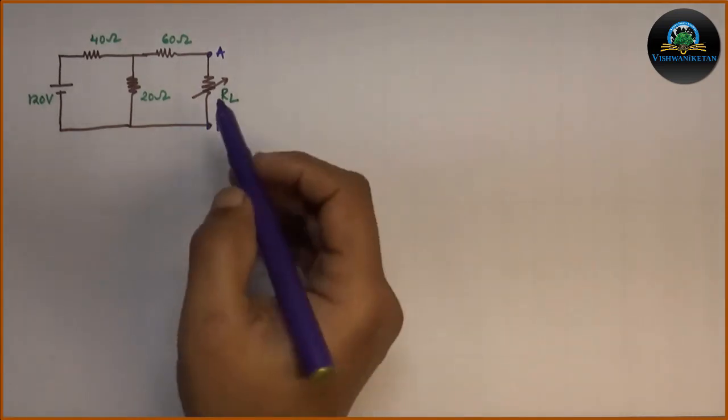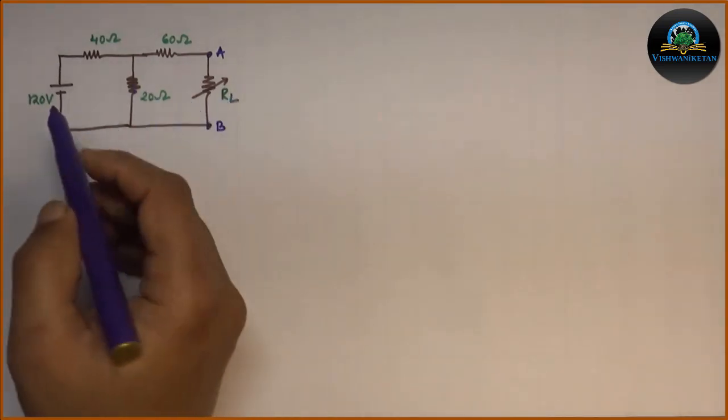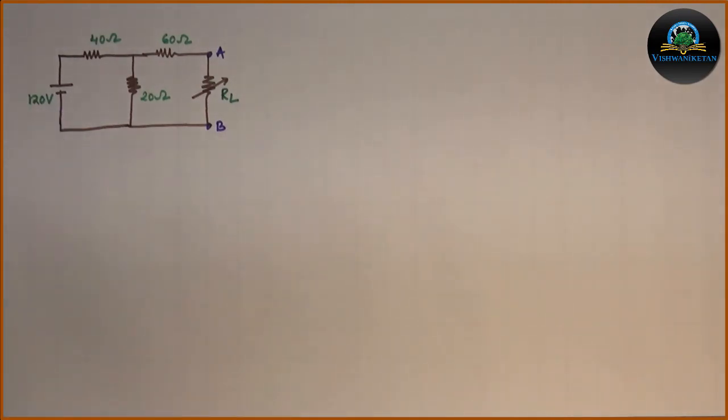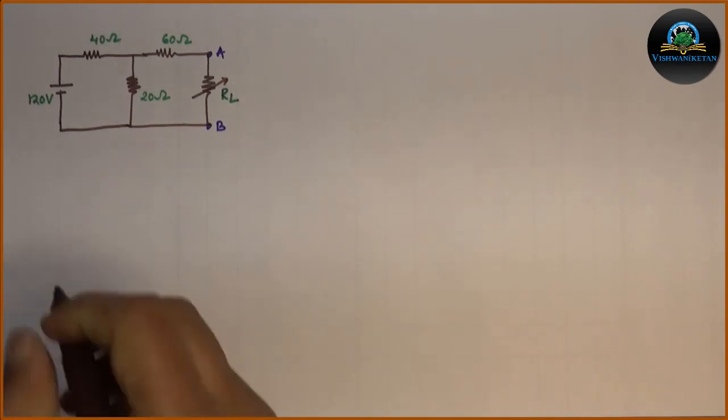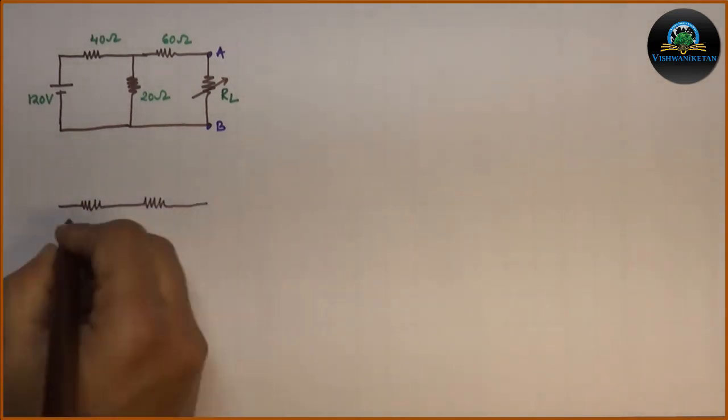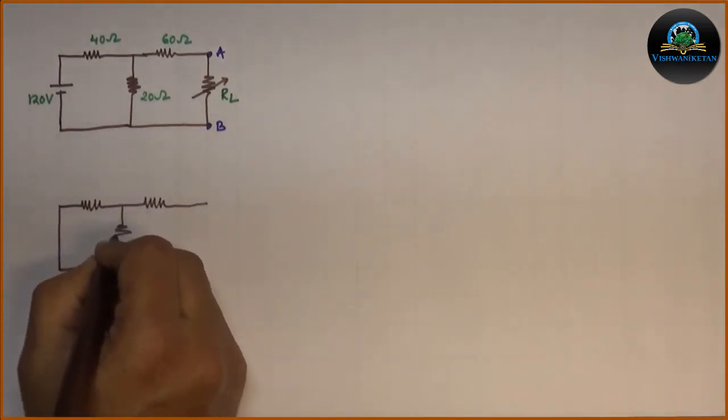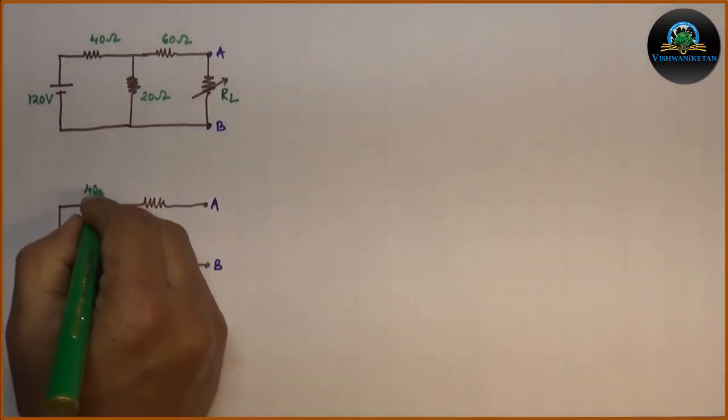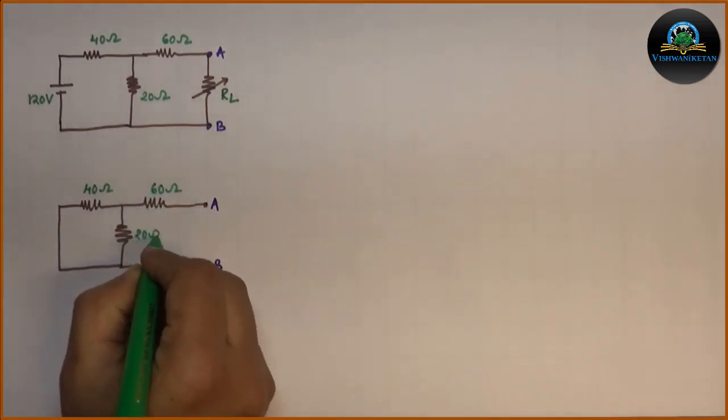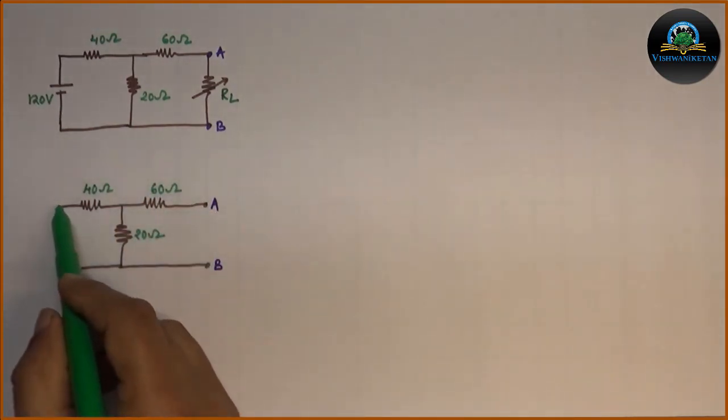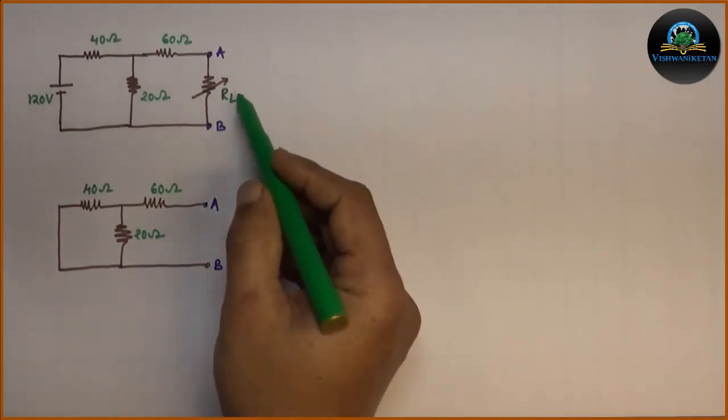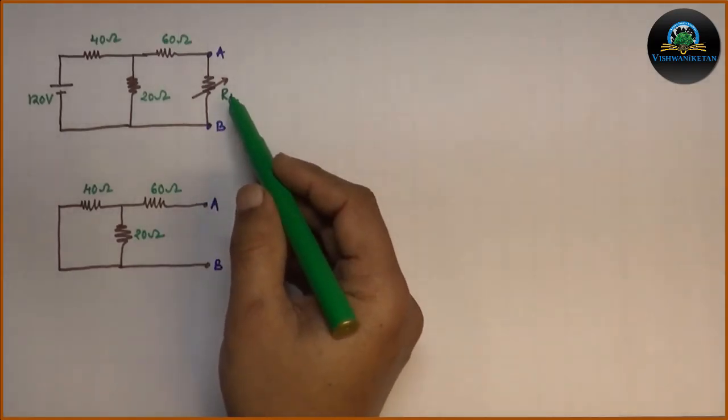Then our circuit will modify. Here the battery or source 120V is replaced by short circuit and A and B terminals are opened. The RL resistance is removed from the circuit.